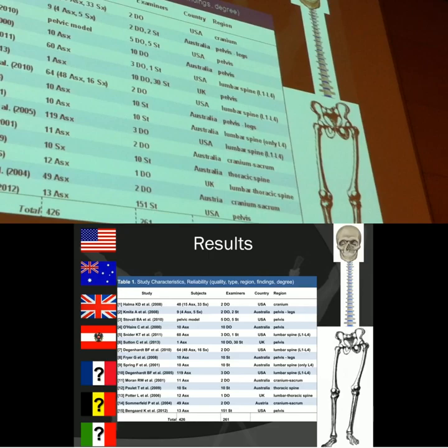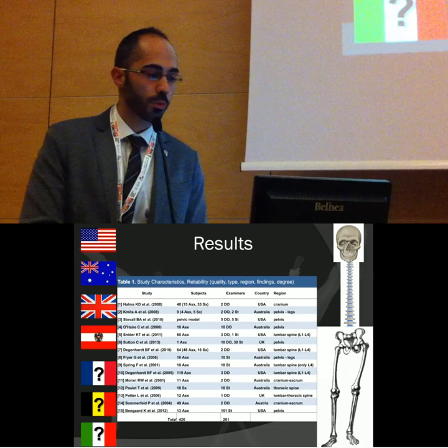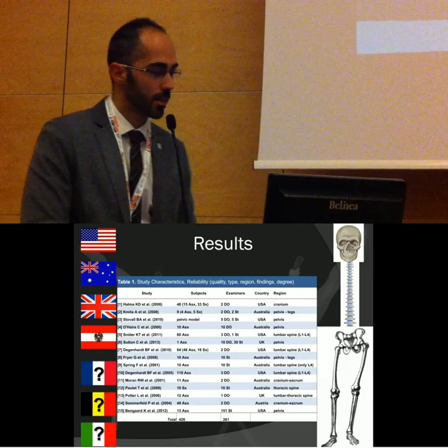All the tests found used the TART criteria — texture change, asymmetry, restriction of motion, and tenderness. For the cranium, we found many studies about the cranial rhythmic impulse, as mentioned earlier. According to the proportion of yes replies, the quality of the studies was good and the structuring of the studies was good, but unfortunately the reliability is pretty low.